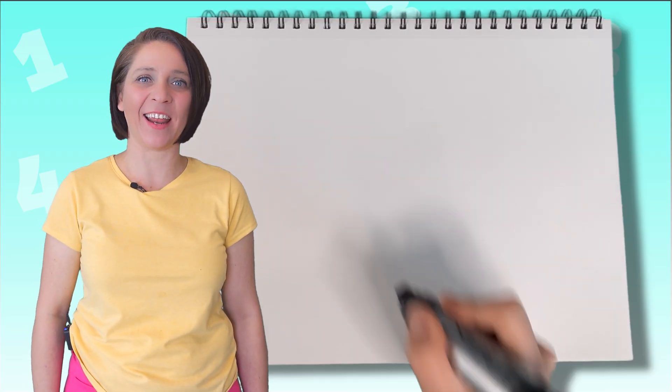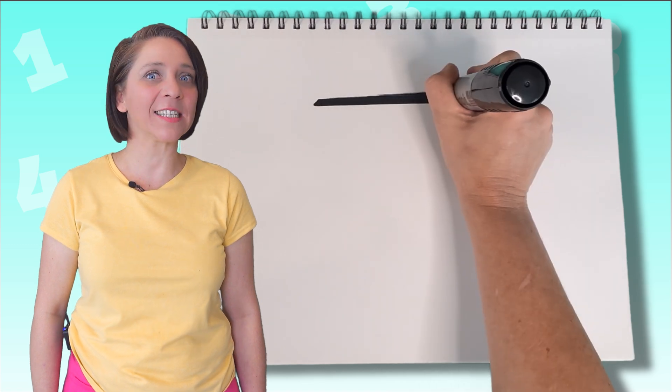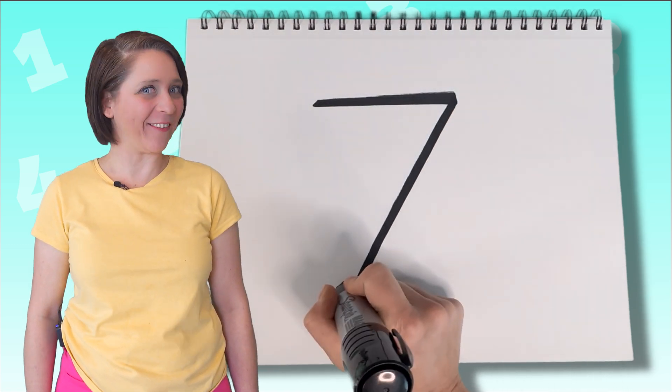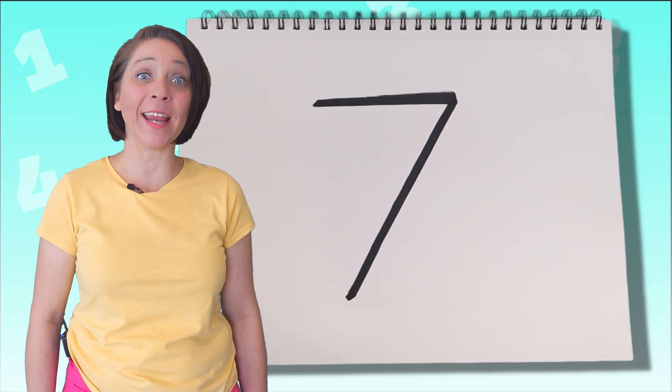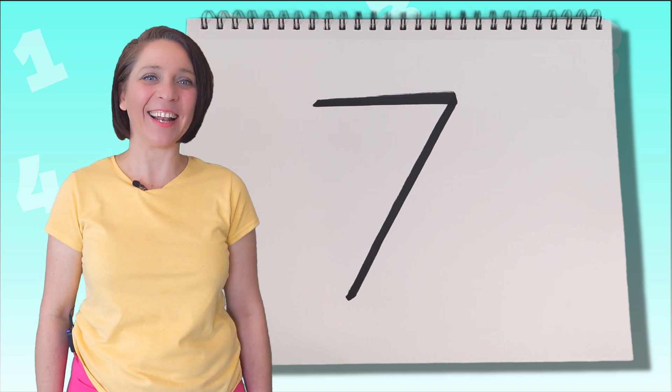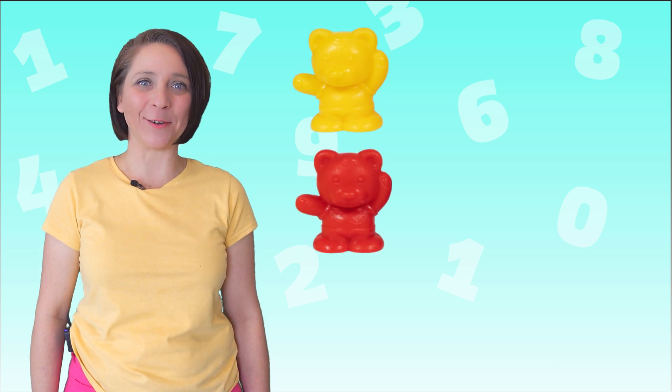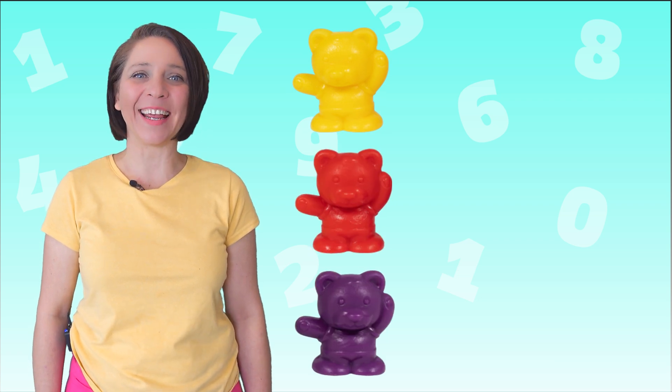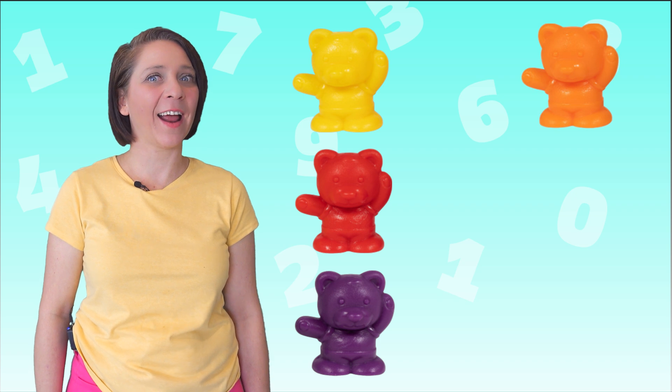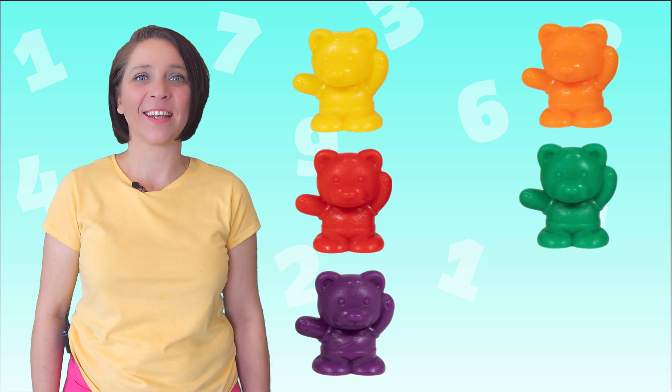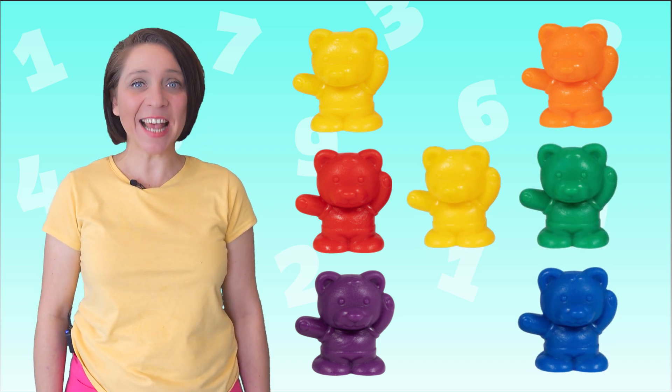Now what's next? Yeah! Number seven. Straight across and down from heaven. That's the way to make a seven. Let's count to seven. One, two, three, four, five, six, seven.